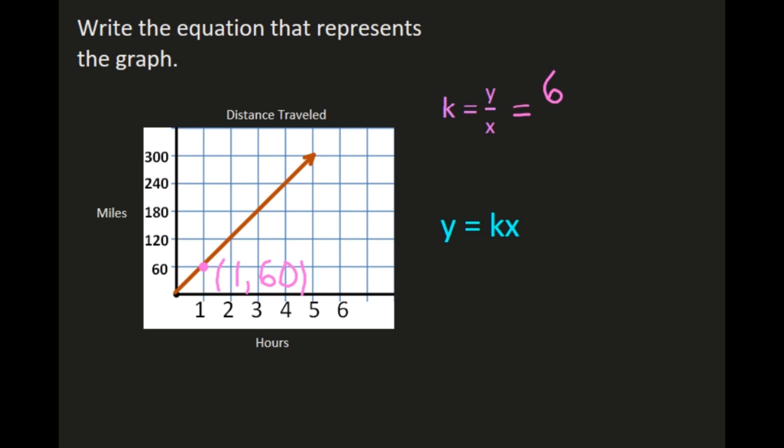So my y value is 60, so it needs to go on top. My x value is 1, it will go on the bottom. And 60 divided by 1 is 60. So my constant of proportionality, or k, is going to be 60. So then in my equation, I'm just going to take this k value and substitute it for k. So the equation for this line in this graph is going to be y equals... We just found that k was 60, so we're going to put 60 in place of k. So our equation will be y equals 60x.